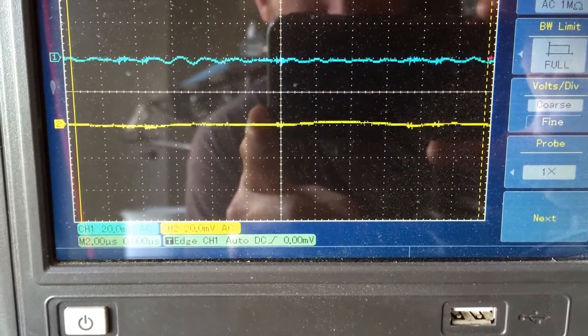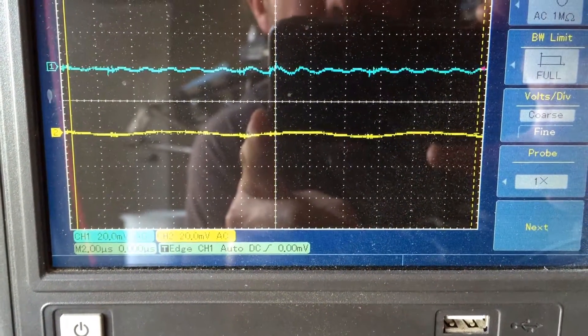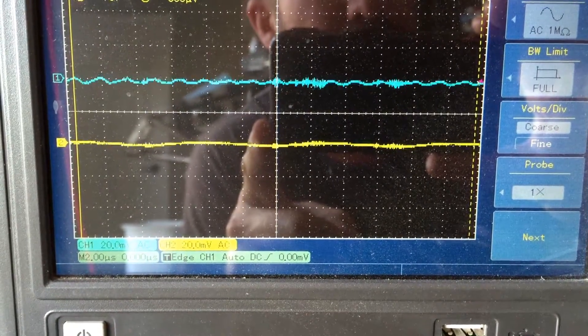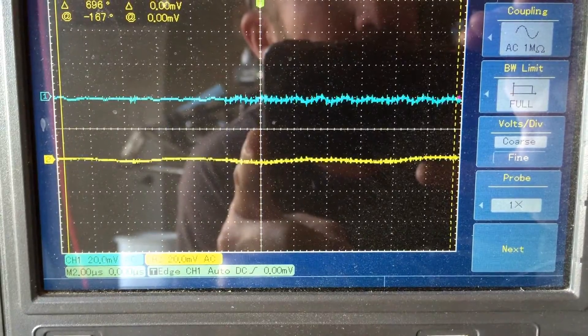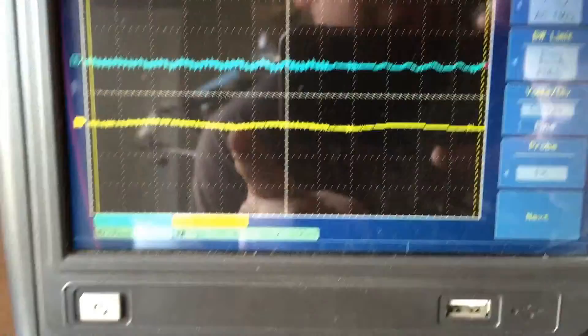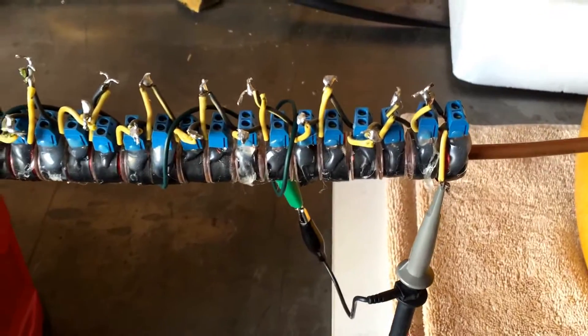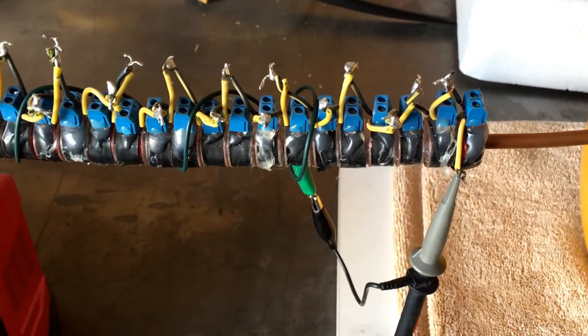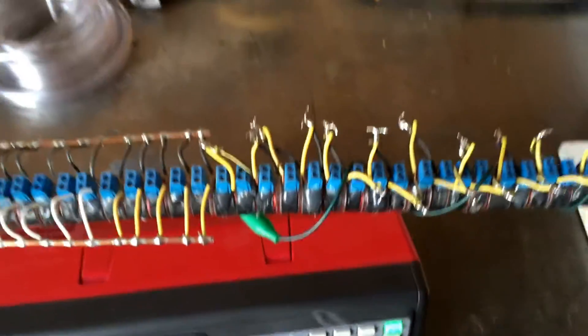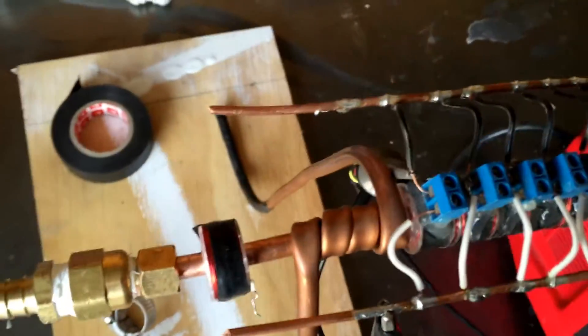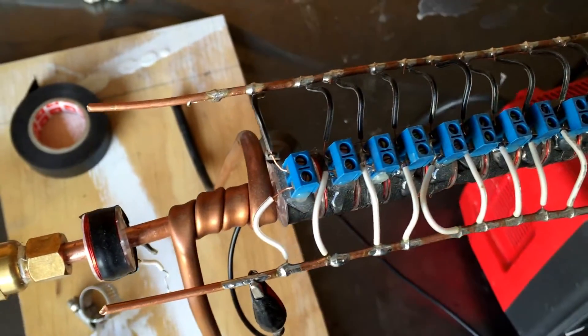I've got channel one and channel two. Channel one is the coils in parallel. Channel two will be the coils in series. So this is channel two. You can see the other end of the wires hooked up right here. And then channel one is right there with those bus bars.